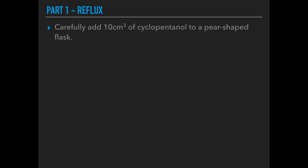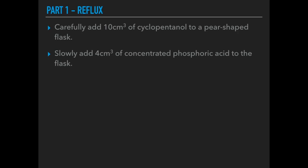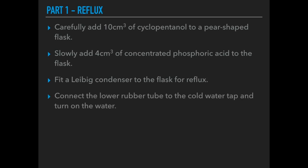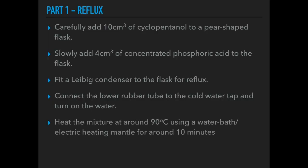Moving on to part one, the reflux step. Carefully add the cyclopentanol to a pear-shaped flask or round-bottom flask, then slowly add the concentrated phosphoric acid to the same flask. Fit a Liebig condenser to the flask for reflux, connect the lower rubber tube to the cold water tap, turn on the water, and heat the mixture to around 90°C using a water bath or electric heating mantle for around 10 minutes.